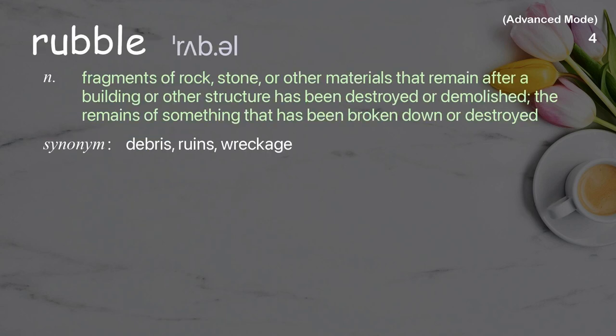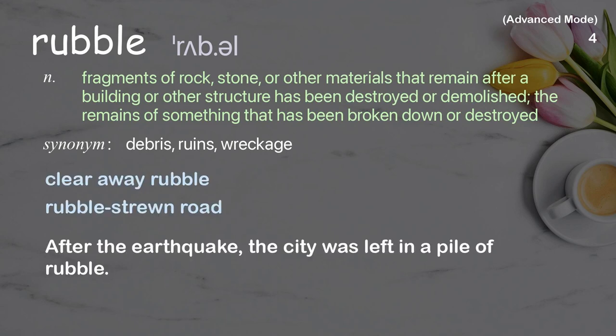Rubble: fragments of rock, stone, or other materials that remain after a building or other structure has been destroyed or demolished. The remains of something that has been broken down or destroyed. Examples: clear away rubble; rubble-strewn road. After the earthquake, the city was left in a pile of rubble.